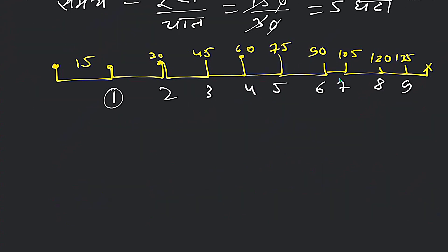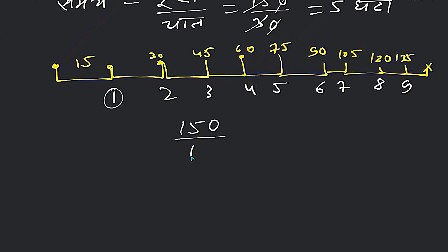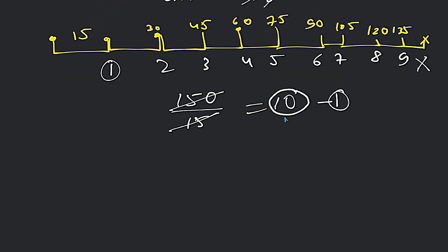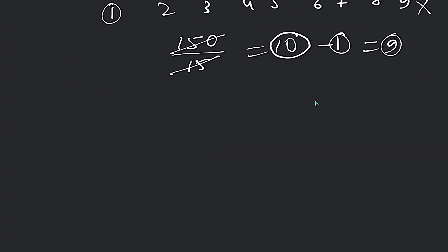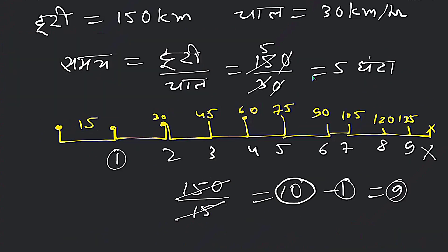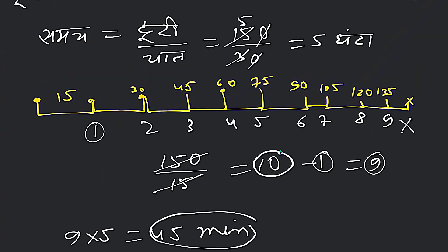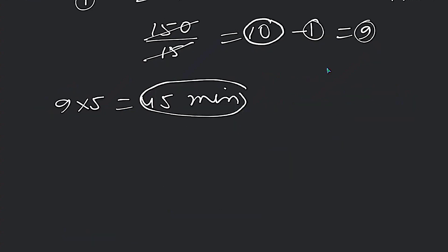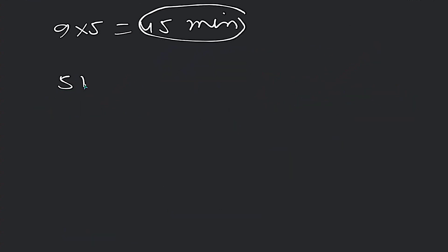Counting: 1, 2, 3, 4, 5, 6, 7, 8, 9. So 9 times. When we divide it, how much distance was it? 150 km. So 15 times, but we have to take 10 times because the last one doesn't count. So how many times? 9 times. 9 times, 5 minutes. 9 times 5 is 45 minutes. So total distance cover takes 5 hours, plus 45 minutes stop time. So total how much time? 5 hours 45 minutes.